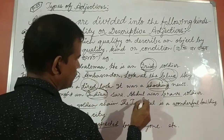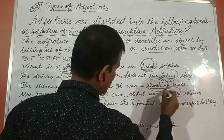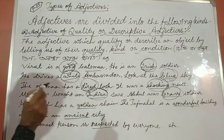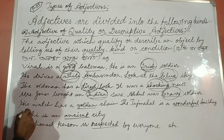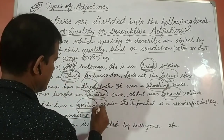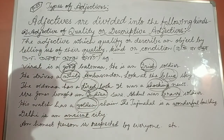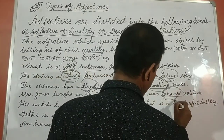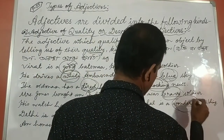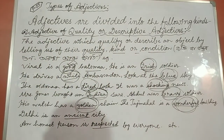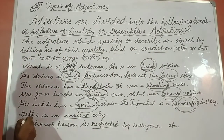Abdul was a brave soldier — brave is the adjective. His was has a golden saying — in this sentence, golden is the adjective. The Taj Mahal is a wonderful building — here wonderful is the adjective.